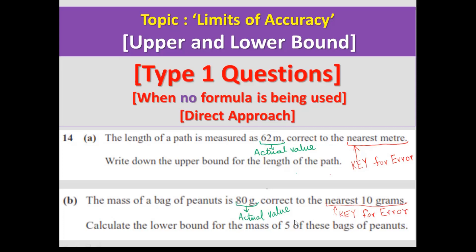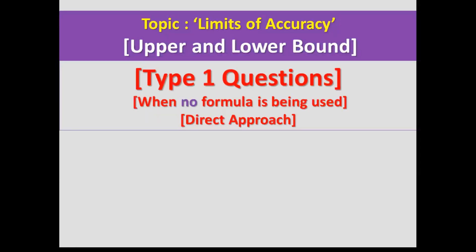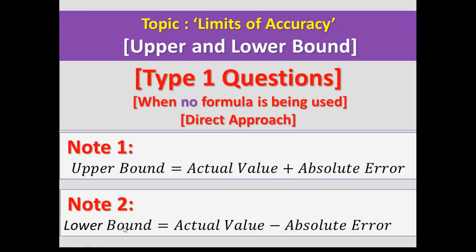Before writing upper bound and lower bound, you should know how to calculate error and how to write upper and lower bound. There are some notes: Note 1 — upper bound equals actual value plus absolute error. Note 2 — lower bound equals actual value minus absolute error. There are some tricks to calculate absolute error.